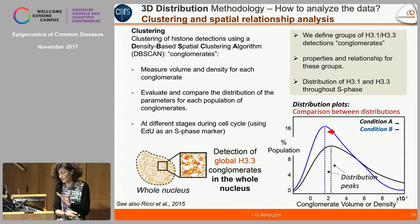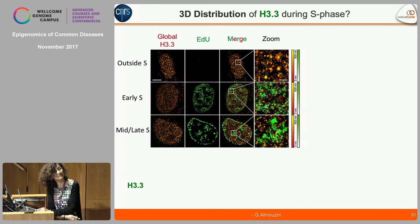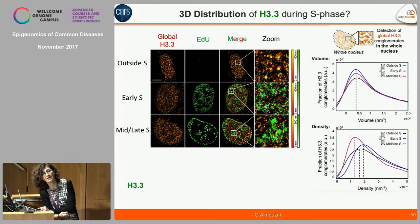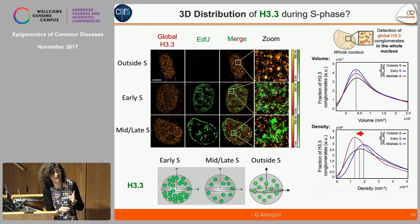Here is the type of image collected for H3.3 — you can see labelling for H3.3 in all phases, with EdU labelling of the replicating cells. Measuring volume and density, the volume is basically the same outside early or mid-late S phase. However, for the density the peaks are clearly shifted. So for H3.3: the volume of these regions remains the same in all cases, however, density is high in early S, diluted in mid-late, and average outside S phase.